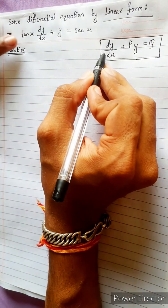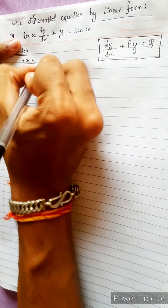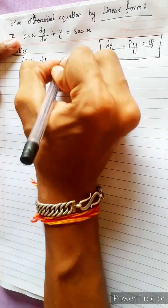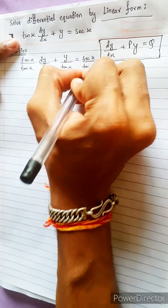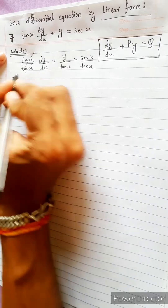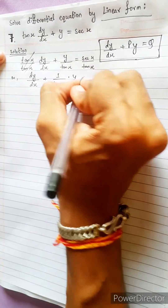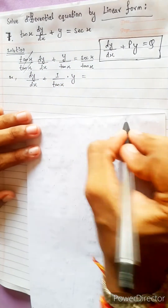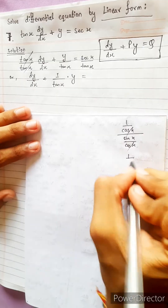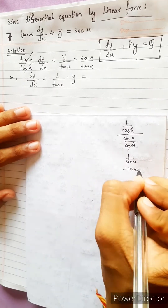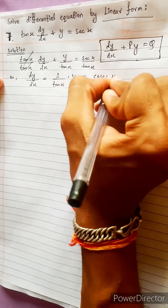Now, we have to divide by 10x: dy/dx plus y/10x equals 0x/10x. You cancel. Or dy/dx plus (1/10x)·y equals (1/cos x)·(sin x/cos x). You cancel. 1/(sin x cos x) equals cos x.